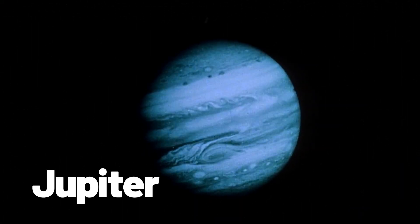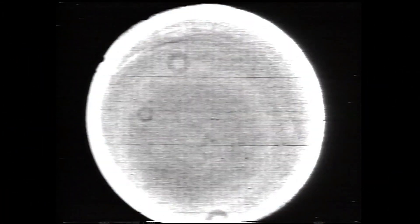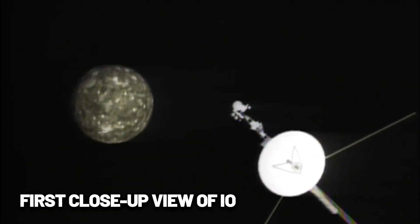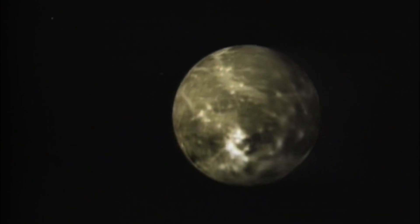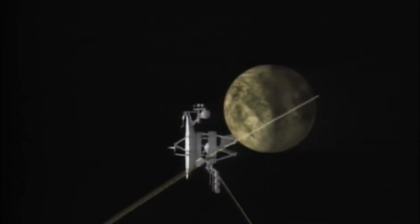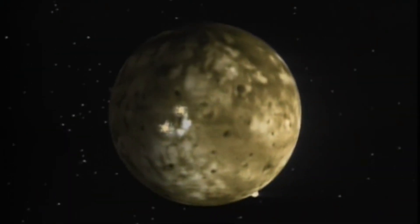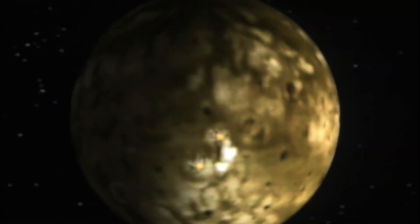Jupiter came first, immense and swirling with storms larger than entire continents. It wasn't just a planet, it was a revelation. Voyager 1 gave us our first close-up view of Io, one of Jupiter's moons, which wasn't the dead, cratered world scientists had expected. Instead, it was alive, volcanically active, spewing fountains of molten sulfur high into the sky, glowing orange and yellow in the cold vacuum of space.